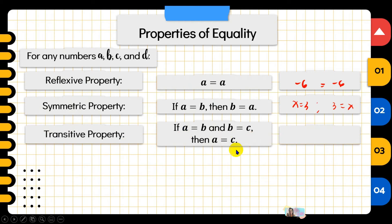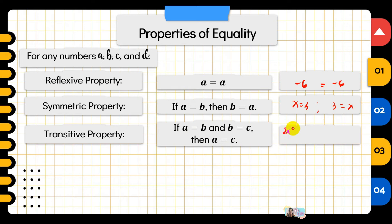Next is the transitive property. With three real numbers involved: if A equals B and B equals C, then A equals C. B acts as a bridge to relate A and C. For example, if 2X equals 4Y and 4Y equals 6Z, then we can say that 2X equals 6Z. That's the transitive property.